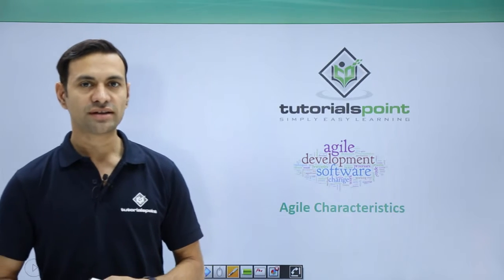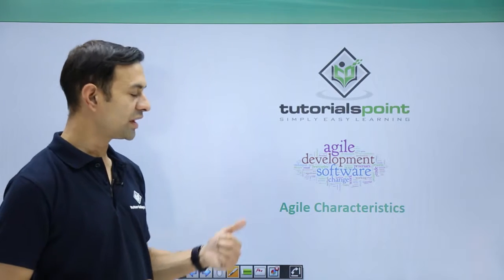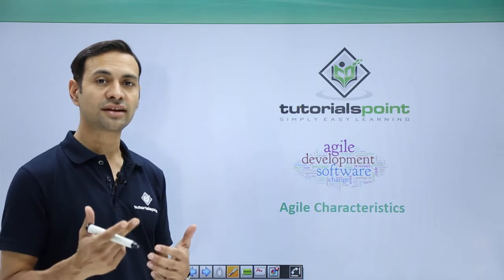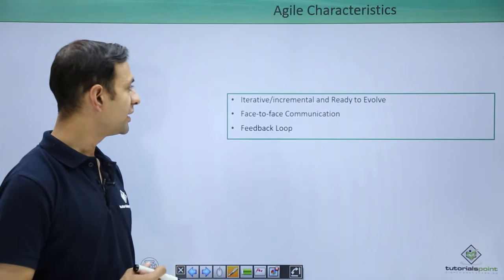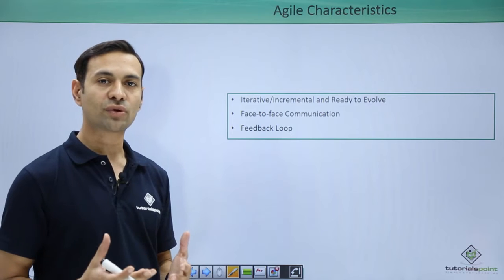Hello friends, welcome to Tutorials Point. In this session, I am going to focus on agile characteristics, the key characteristics of agile methodology. Agile is basically an iterative model of software development.